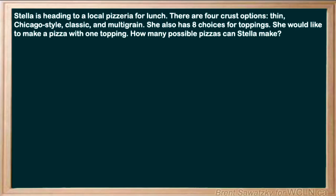In this question, we're building pizzas. We have four crust options and eight topping options, so there are two tasks. The first task is to choose a crust, and since we know there are four options there, the second task is choosing a topping, with eight options.